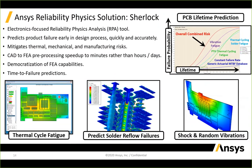This brings us to the reliability physics solution in Sherlock—an electronics-focused reliability physics analysis tool that predicts product failure early in the design process, quickly and accurately. It mitigates thermal, mechanical, and manufacturing risk. A major value Sherlock adds is preprocessing CAD to FEA much faster than doing it manually: it takes an existing ECAD model and produces a working mechanical model in minutes instead of hours or days, democratizing FEA capabilities so more engineers can identify issues early.